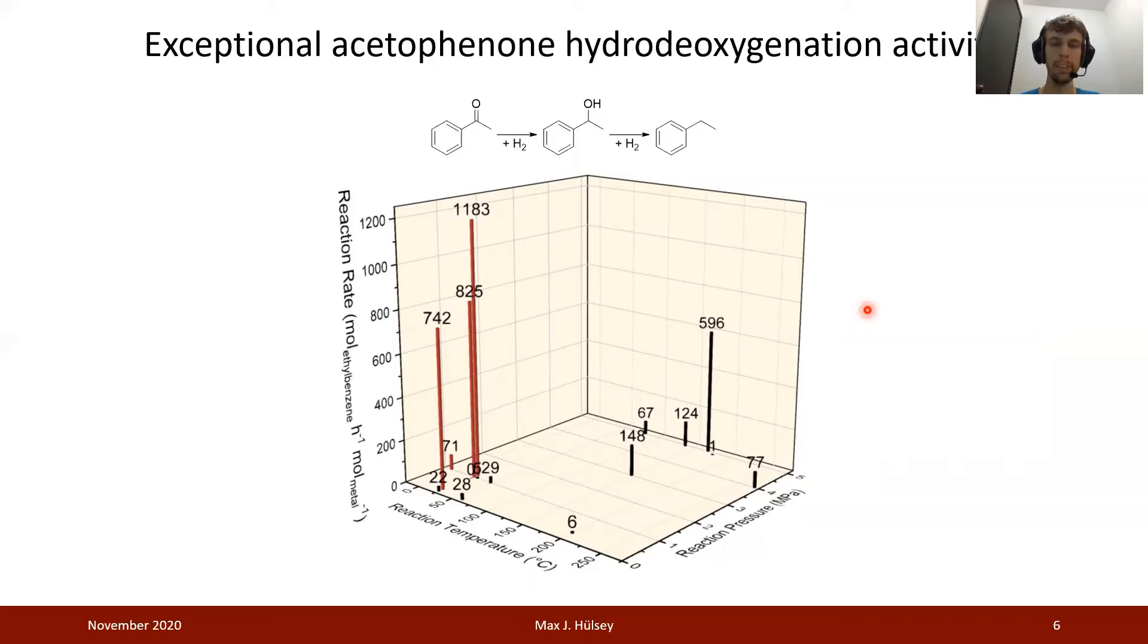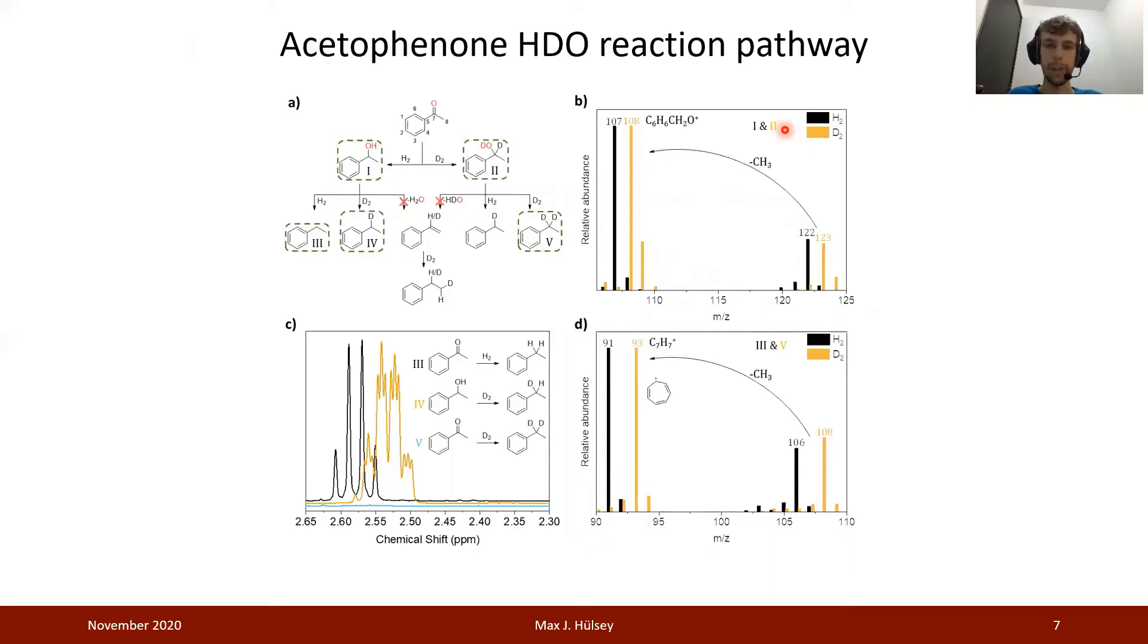Since phosphotungstic acid, especially the cesium salt, is one of the strongest solid acid catalysts, the question arises whether this reaction, the hydrogenolysis of the aromatic C-OH bond, occurs through a dehydration-hydrogenation or through a direct hydrogenolysis pathway. For this, we have done a reaction pathway analysis. Considering that if we treat acetophenone under different gas atmospheres, either hydrogen or deuterium, we should end up with two different hydrogenated intermediates, which if we treat them under different atmospheres like hydrogen or deuterium, we should be able to obtain different intermediates based on which pathway it follows.